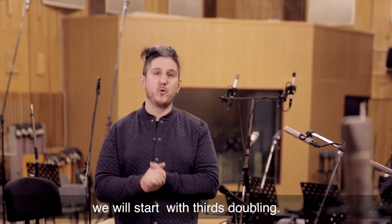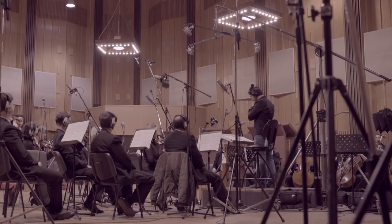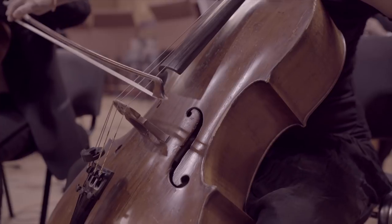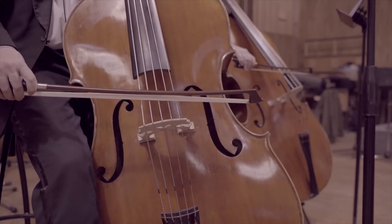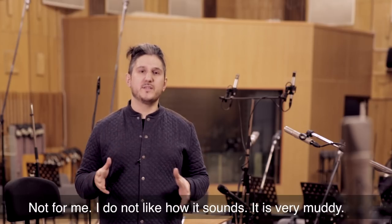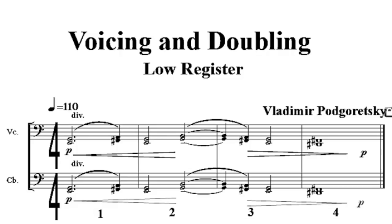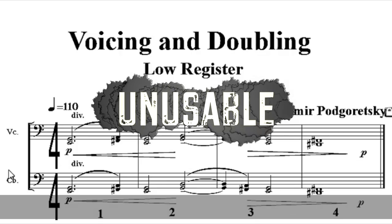We will start with thirds doubling. I don't like how it sounds — it's very muddy. As you can see in these examples, contrabasses doubling the cellos one octave lower makes this voicing kind of unusable.